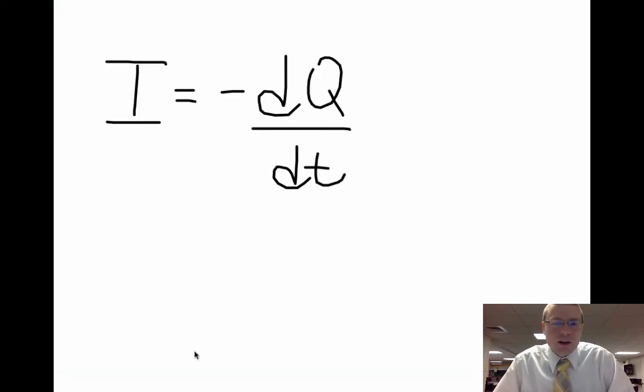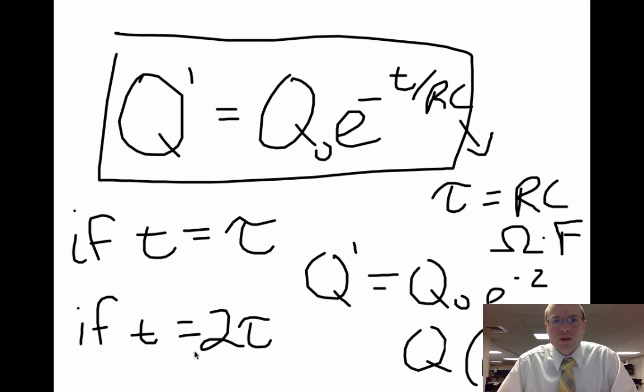Well, going back to the definition of current, current is the rate of change of charge per second passing through a circuit. And since it's a decrease in the amount of charge on a capacitor, we're going to have a negative dQ over dt. So that means I have to take the negative derivative of our original function here.